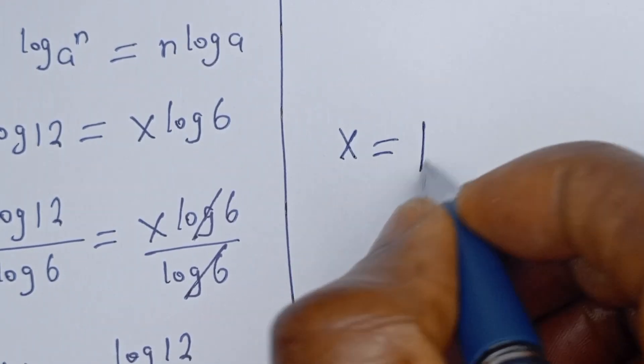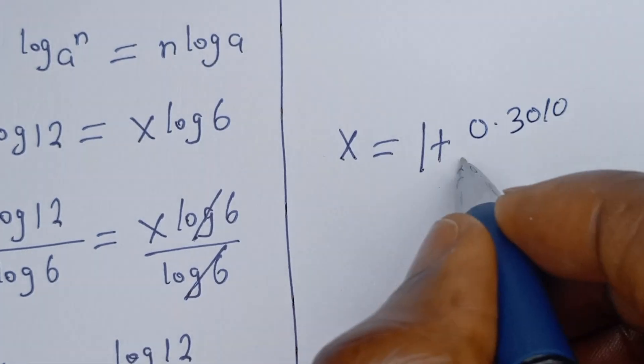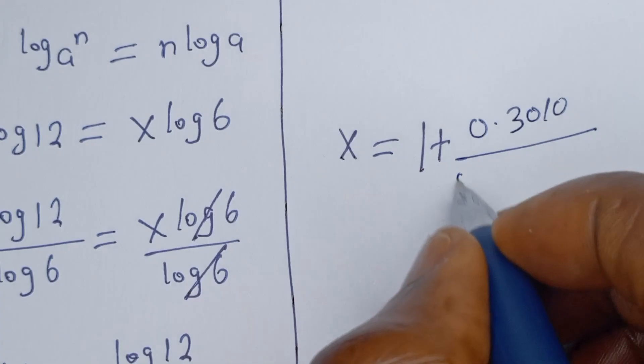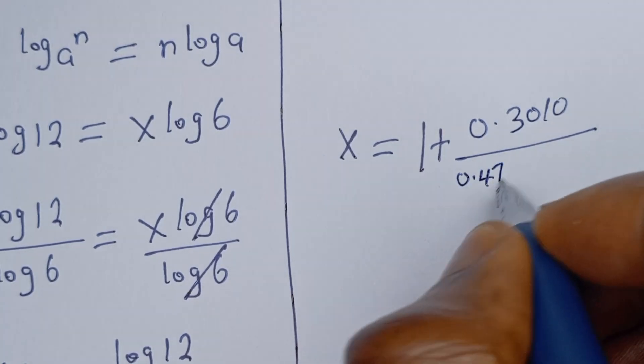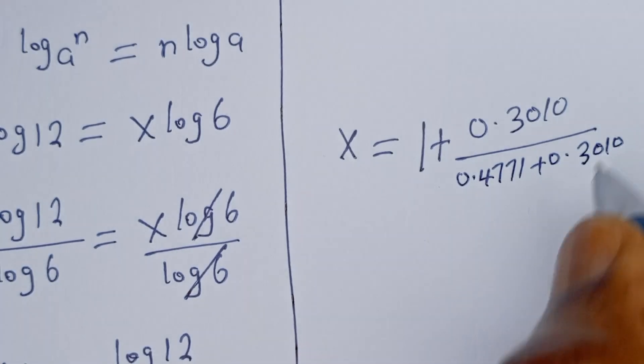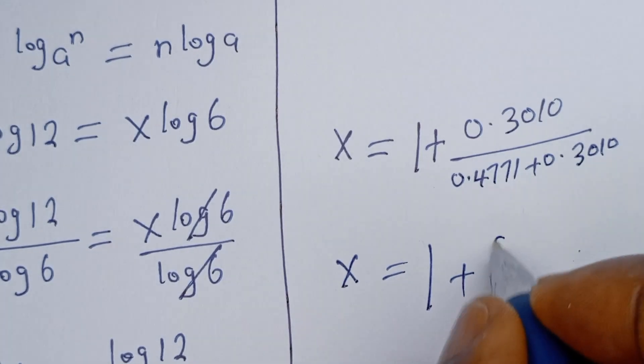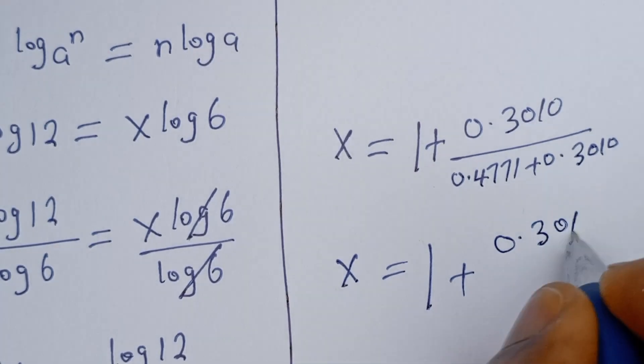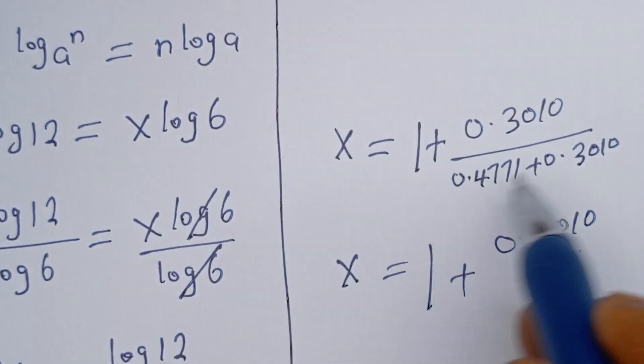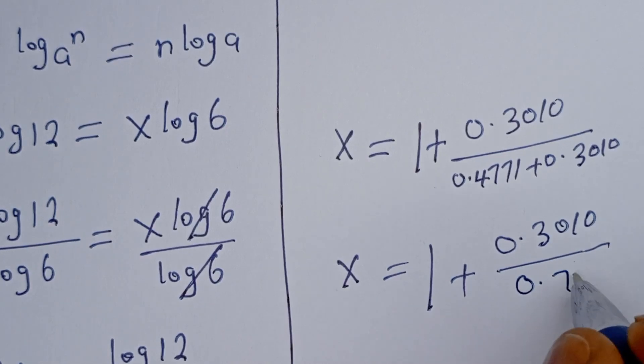1 plus 0.3010 divided by 0.4771 plus 0.3010. If you add these two together in the denominator, we have 0.7781.